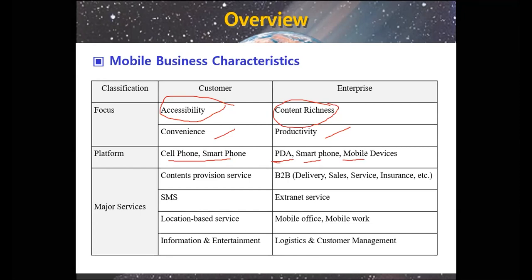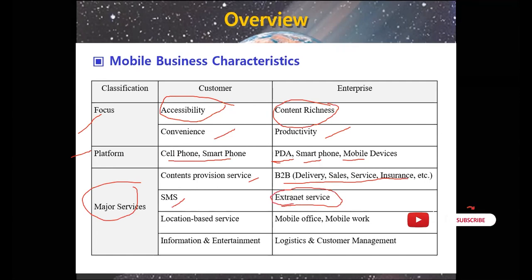Major services for customers are content provision services. For the enterprise, it is business-to-business delivery, sales services, and insurance. For customers there is also SMS, and for enterprise there is external service. For customers, location-based service; for enterprise, mobile office and mobile work. For customers, the last one is information and entertainment; for the enterprise, logistics and customer management.